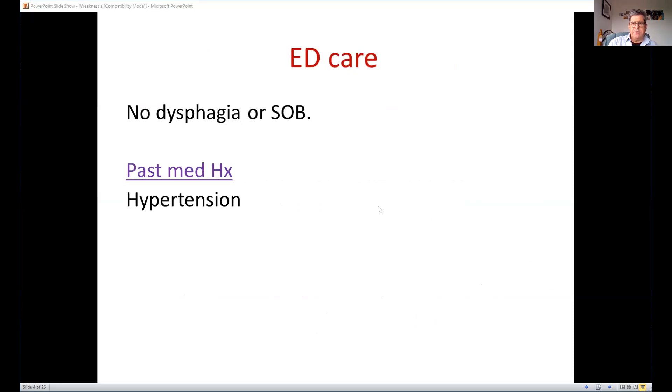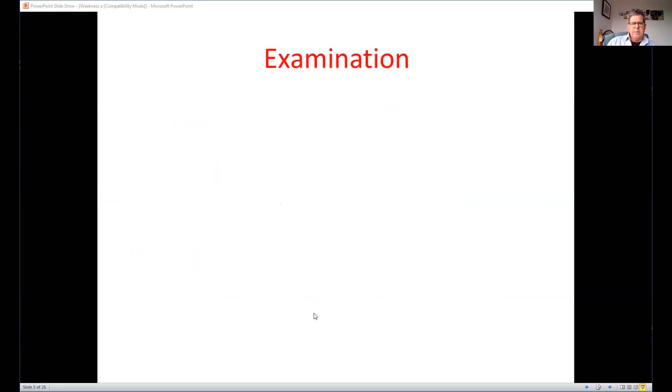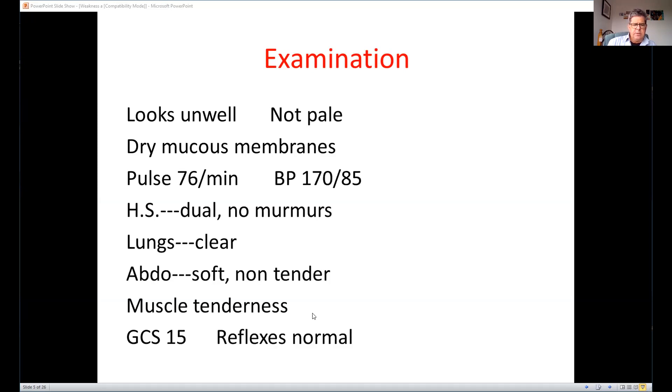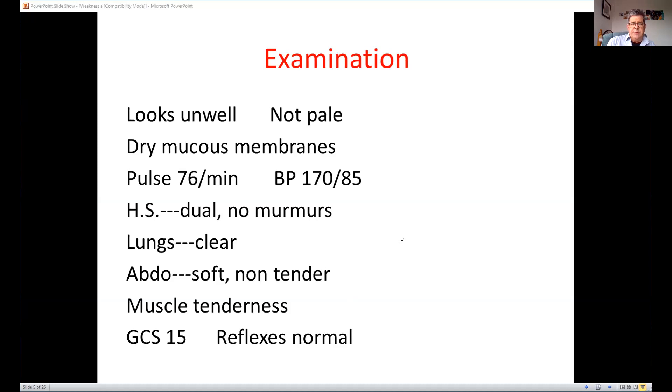His background is some hypertension and not that exciting. He's on a little bit of Micardis and amlodipine. His examination again is relatively unremarkable. He's dehydrated, he's afebrile, he's hypertensive. He's got some pain when you touch his muscles themselves. The reflexes are normal. So it's not as though he's got some transverse myelitis or an ascending myelopathy or something similar to that. His GCS is 15.